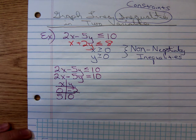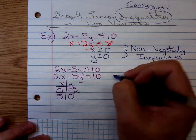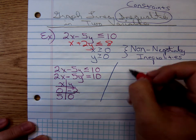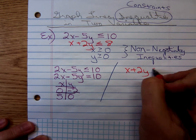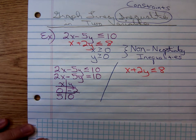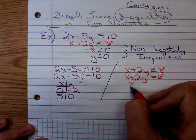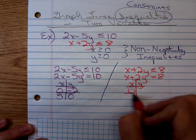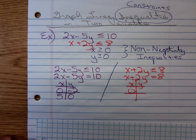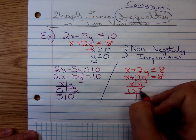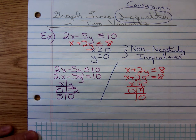I'm going to go ahead and make the boundary line for the next inequality as well. x plus 2y is less than or equal to 8. The boundary line is x plus 2y equals 8. We'll find our intercepts. When x is 0, what's y? 4. That would be 2y equals 8, so y is 4. When y is 0, what's x? 8.